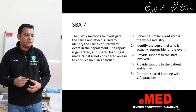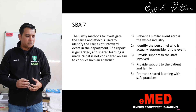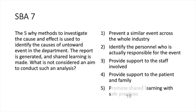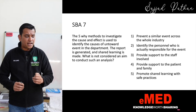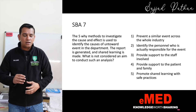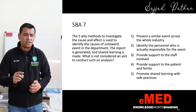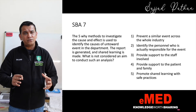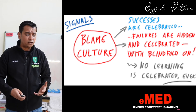Question number seven: the five-why method is used to investigate cause and effect and identify causes of an untoward incident. The report is generated and shared learning is made. What is not considered an aim when conducting such an analysis? The options include: prevent similar events across the whole industry, identify the personnel responsible, provide support to staff, provide support to the patient and family, and promote shared learning with safe practices. The answer is identifying the personnel responsible. This is not the aim — doing so produces a blame culture, which discourages staff from reporting errors.